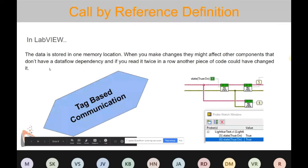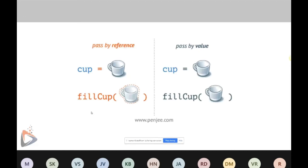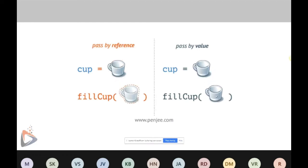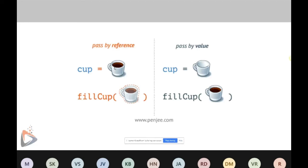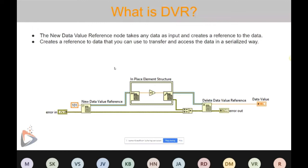Consider a fill-cup as a function. In pass by value, only the fill-cup's formal parameter gets filled — it won't affect your actual parameter. In pass by reference, both are filled because the change in the formal parameter is replicated in the actual parameter. Now we come to the main topic of this presentation: DVR — Data Value Reference.